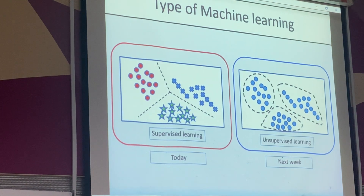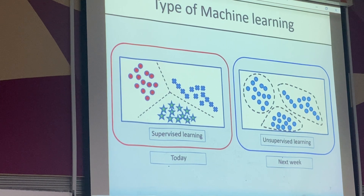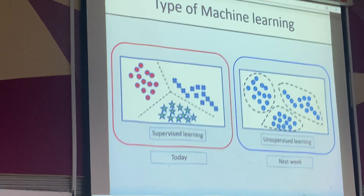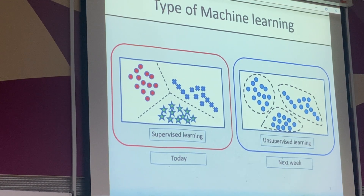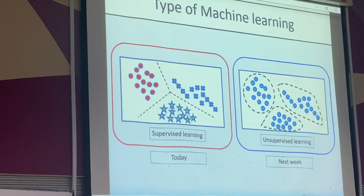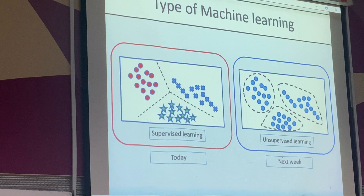Today we'll cover supervised machine learning. We'll look at some very common supervised ML algorithms. In practicals, you just call the function — for example, naïve Bayes — but you don't know the concept behind it. If you don't understand the concept behind each algorithm, you'll just trial and error. But if you understand, you'll know which parameters to fine-tune and whether the algorithm is suitable for your data.